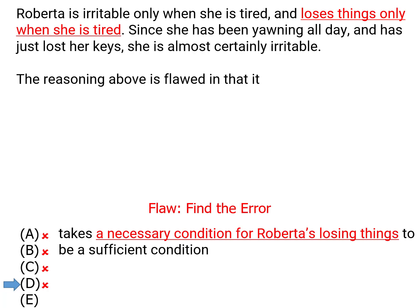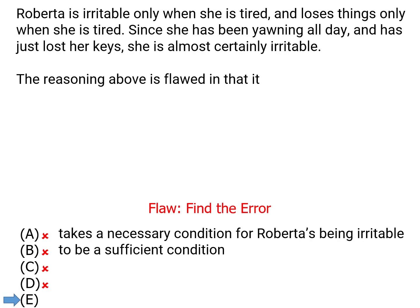That means the correct answer has to be answer choice E: it takes a necessary condition from Roberta's being irritable to be a sufficient condition — and that was the error we identified. Just because she's tired, we don't know she's irritable. Being tired is a necessary condition for her to be irritable, but that doesn't mean it is a sufficient condition to prove that she's irritable. So answer choice E is our answer.